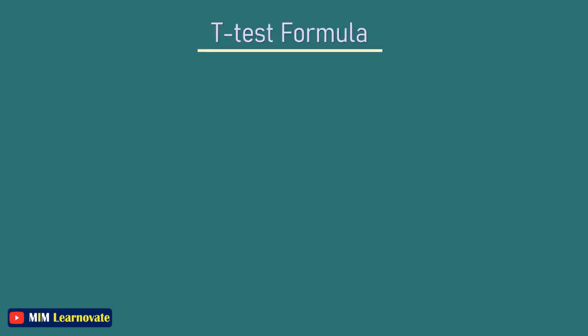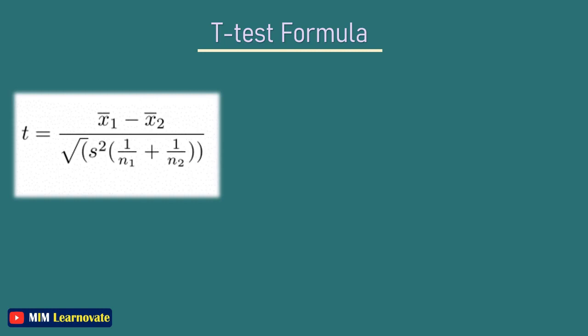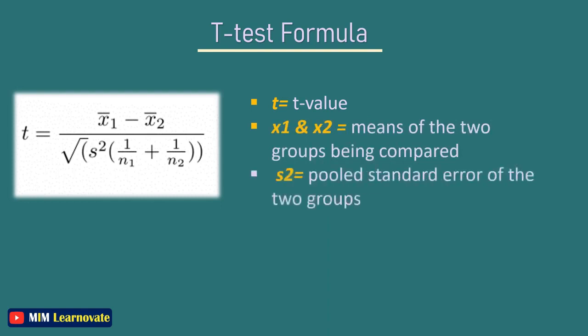T-test formula. This is the formula for the two sample T-test. In this formula, T is the T value, X1 and X2 are the means of the two groups being compared, S2 is the pooled standard error of the two groups, and N1 and N2 are the number of observations in each of the groups.